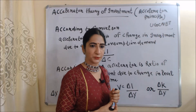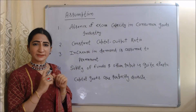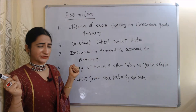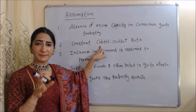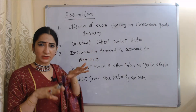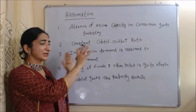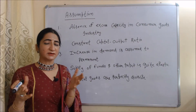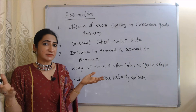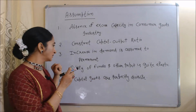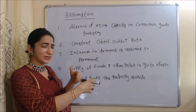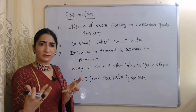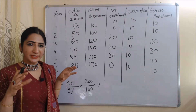Now let's talk about the assumptions of this principle. First, absence of excess capacity in the consumer goods industry — we assume there is no extra capacity. Second, constant capital-output ratio — we assume it will remain constant and not change. Third, increased demand is assumed to be permanent, not seasonal. Fourth, supply of funds and other inputs is quite elastic, meaning we can change them as per requirement. Fifth, capital goods are perfectly divisible.